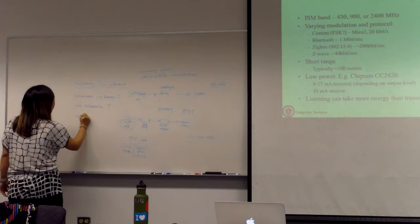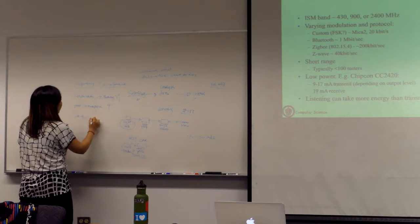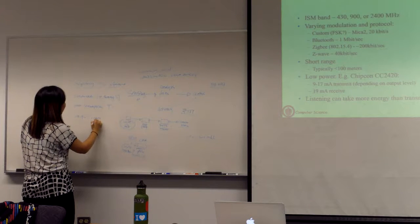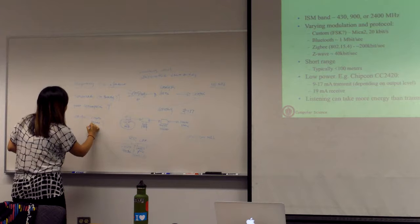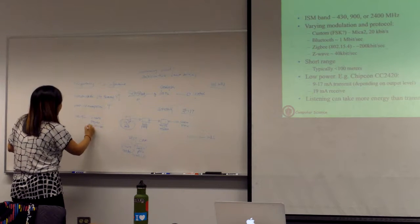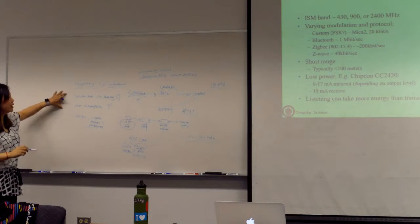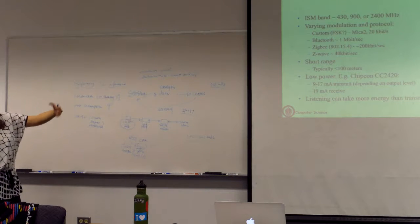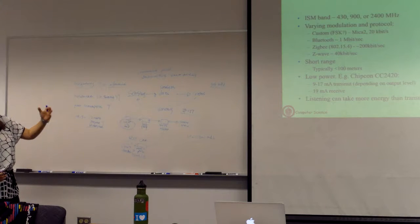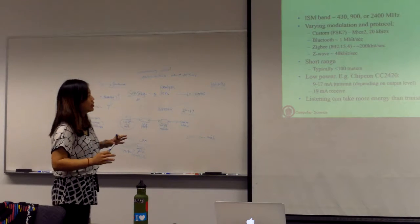The third trade-off is range. Bluetooth has a shorter range than ZigBee despite operating on the same frequency, because Bluetooth has higher bandwidth. The trade-off between range and bandwidth means that when designing protocols, you must take all these factors into consideration. Depending on your application — whether you need 100 meters range or just 10 meters — this gives you flexibility in which protocol to use or whether to design your own.